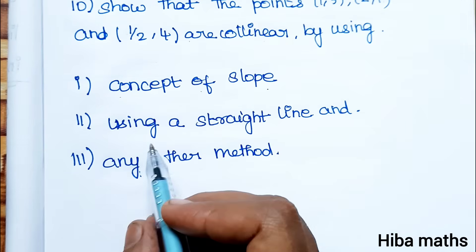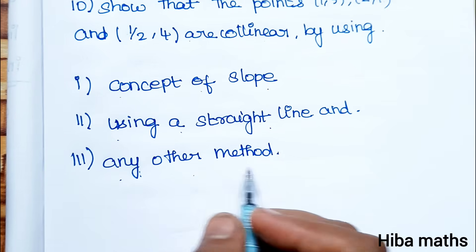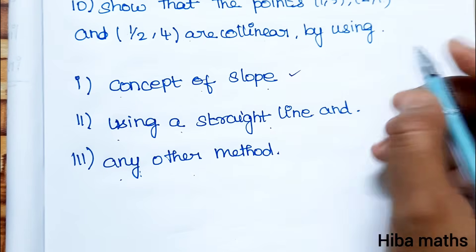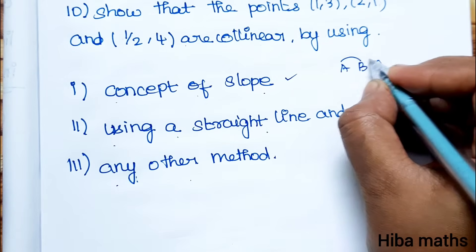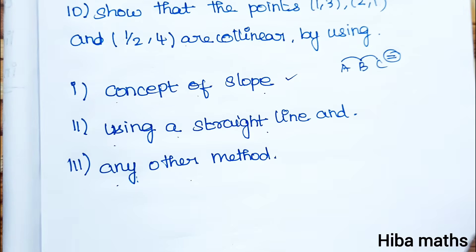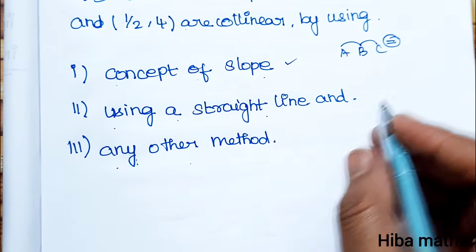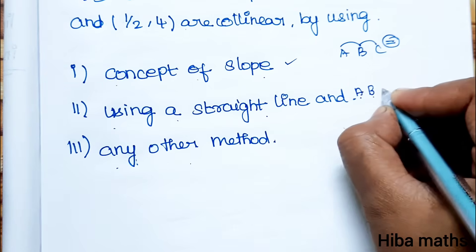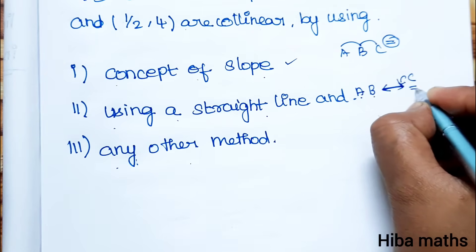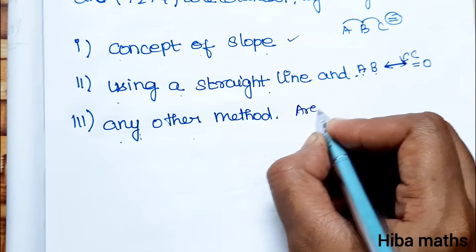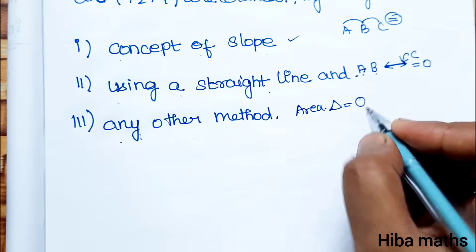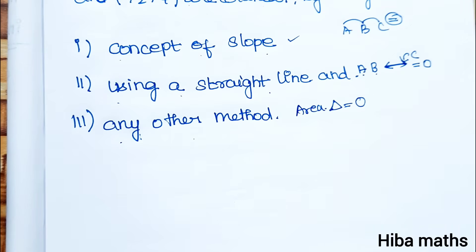The three methods are: first, using the concept of slope with the slope formula; second, using a straight line — find the line equation through two points and verify the third point lies on it; and third, any other method — that is, using the area of a triangle with 3 points. If area equals zero, the points are collinear.